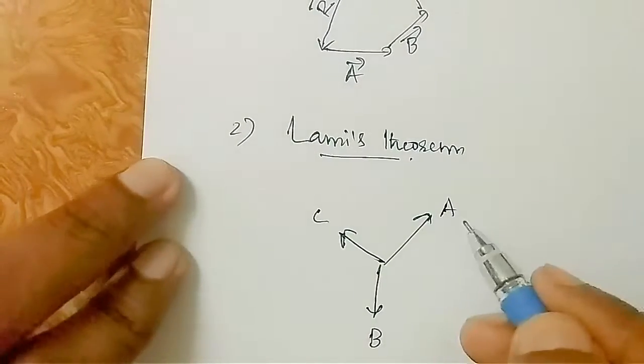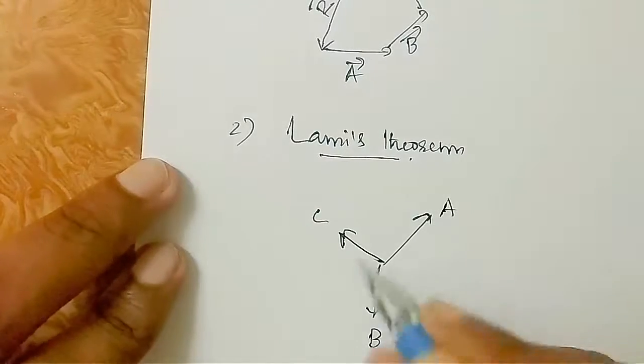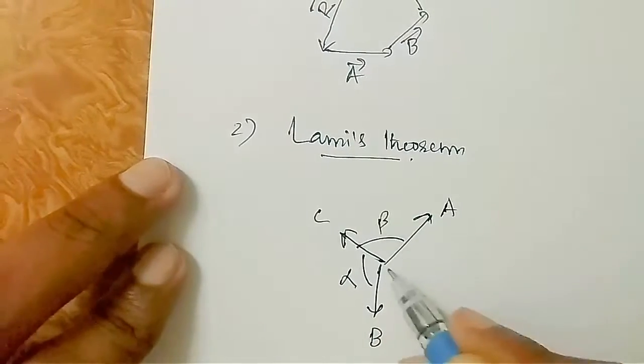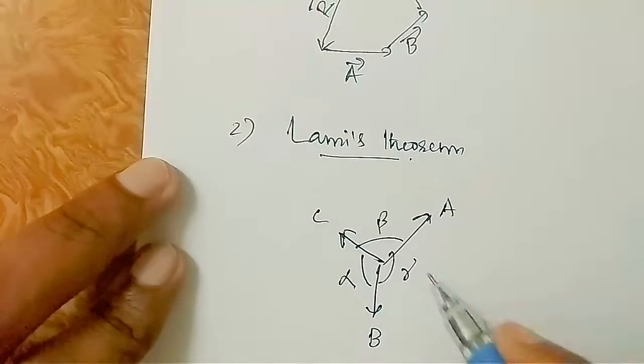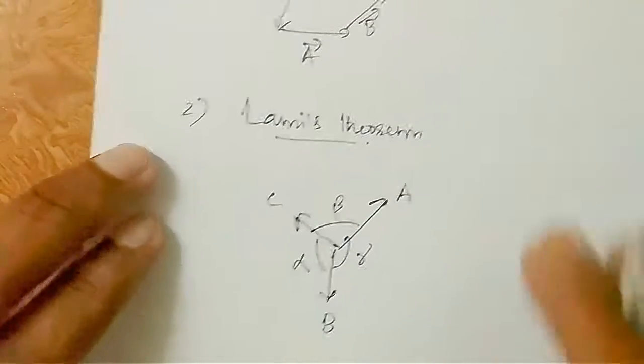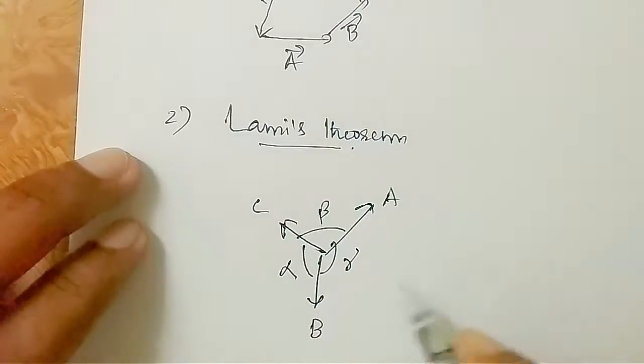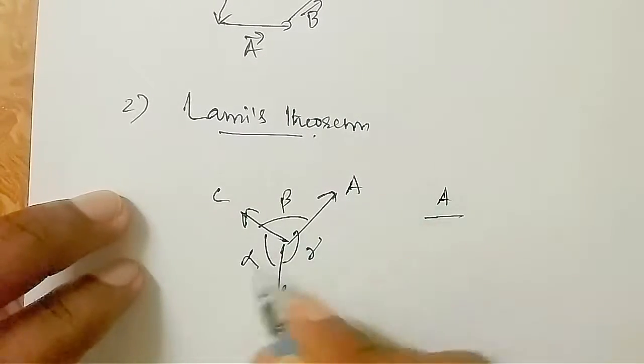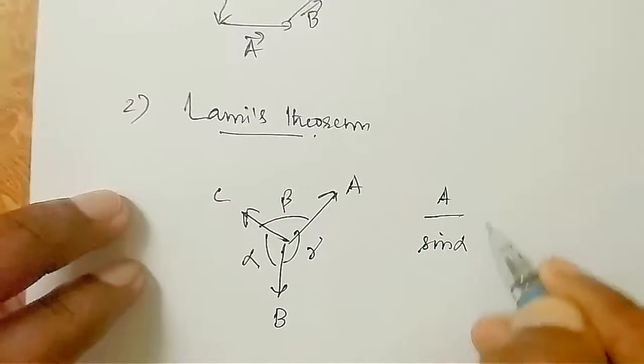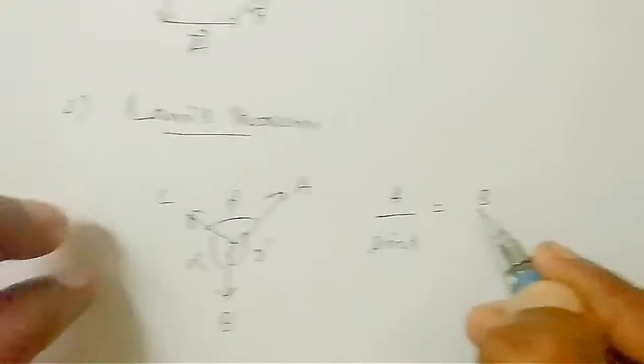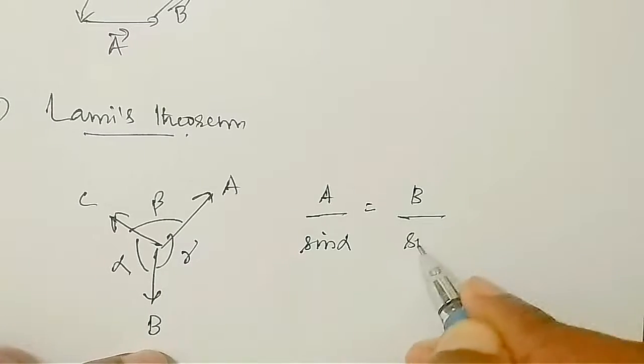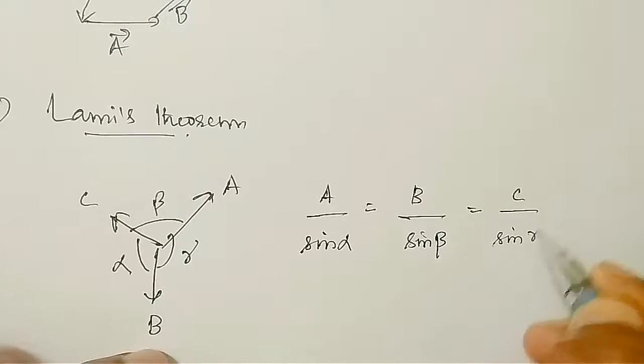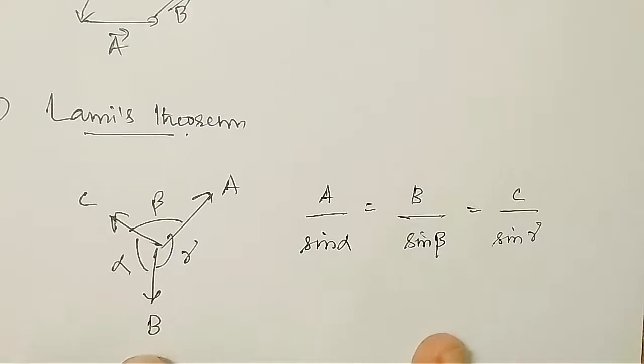These three vectors are in equilibrium. The angles between the vectors are alpha, beta, and gamma. Lamy's theorem states that A divided by sin alpha equals B divided by sin beta equals C divided by sin gamma.